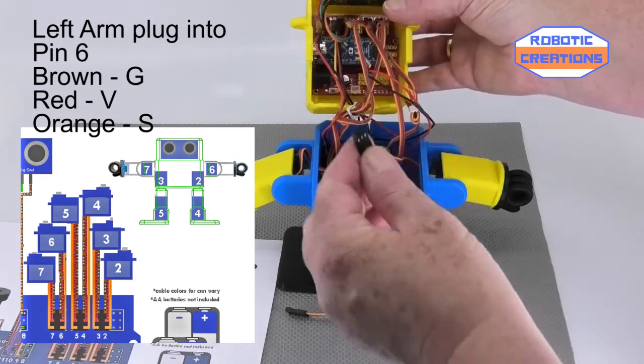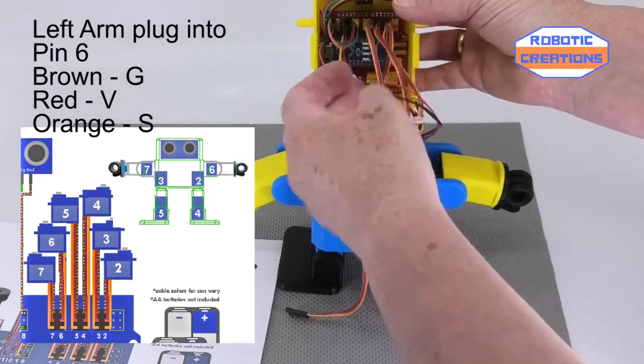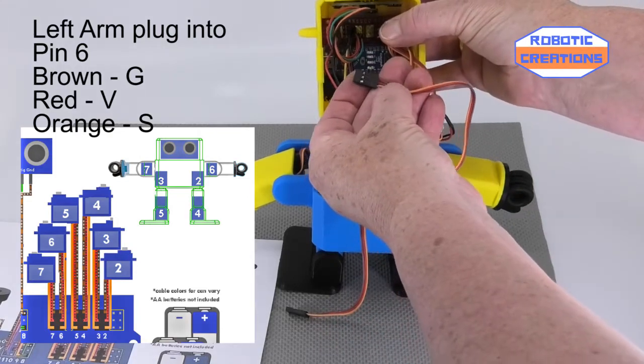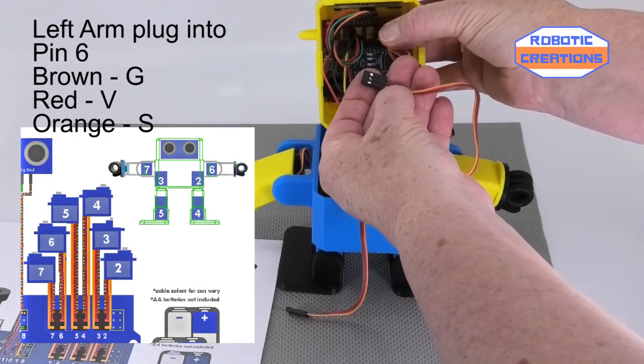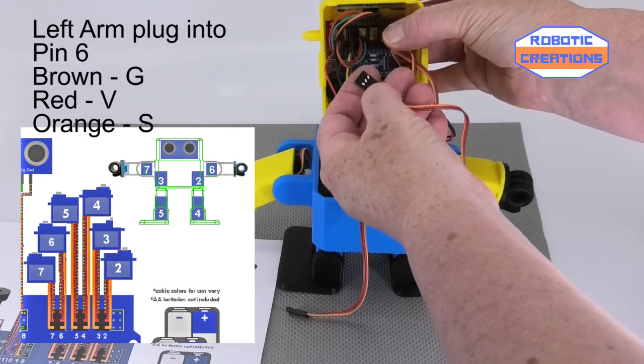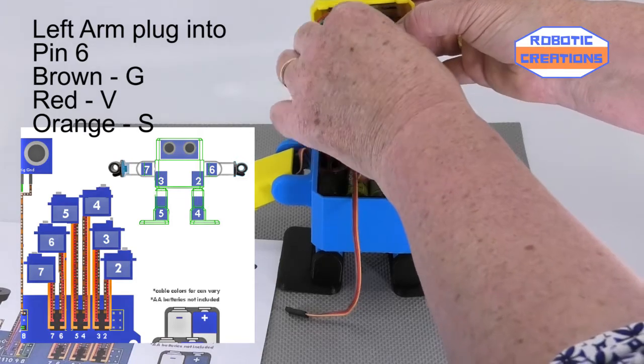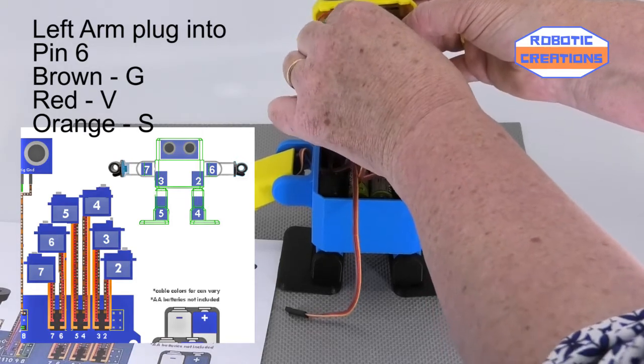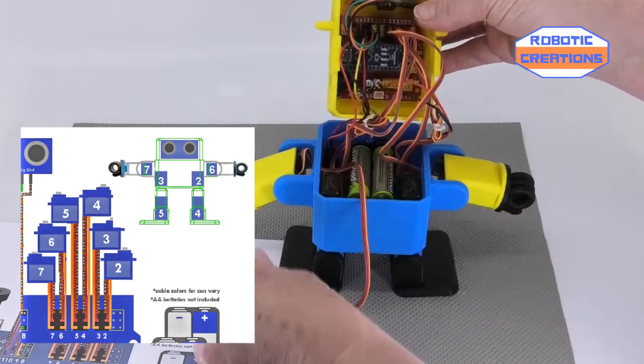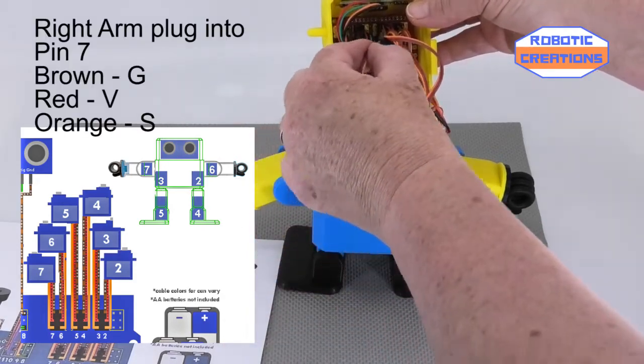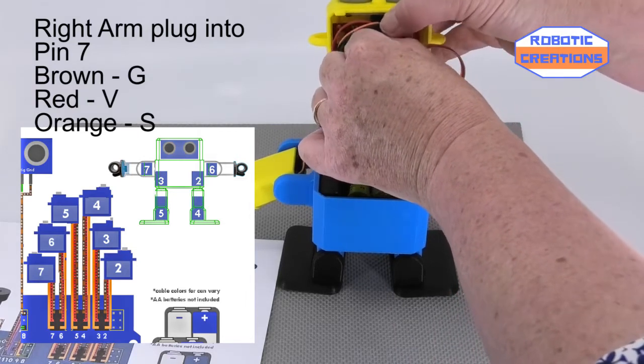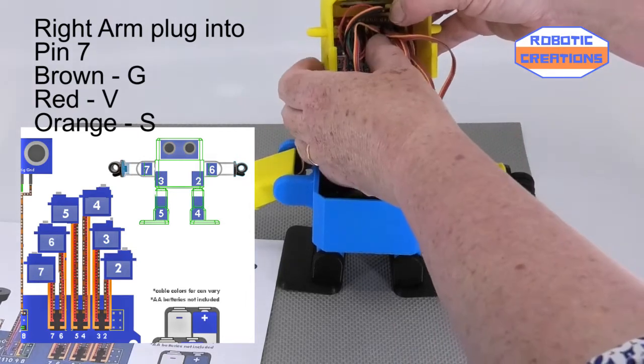Slot that in, make sure those are all well down. The left Otto arm actually goes into the right one. Right arm is number 6, so remember brown is your ground, red is your 5 volts, and orange is your signal, and that goes into number 6. Just be careful how you line it up, just push it back and then push it in. Then again we do the right arm, which is number 7.